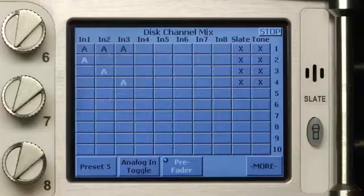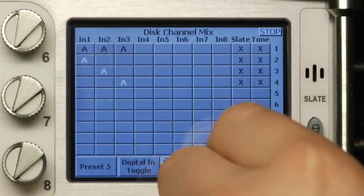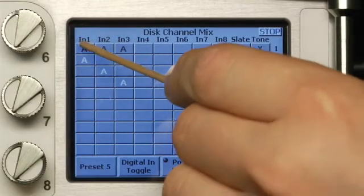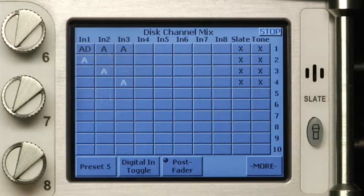It is possible to route digital and analog inputs to the same disk track. For example, to add a digital source to our mix, connect it to the AES 1 and 2 input. Go to the disk mix. Make sure the bottom row says Digital and Post Fader. Then press the box connecting input 1 to disk track 1. Note that a black D appears in addition to the A. These routings are independent of one another and can be pre or post fader. Let's remove the D before continuing.